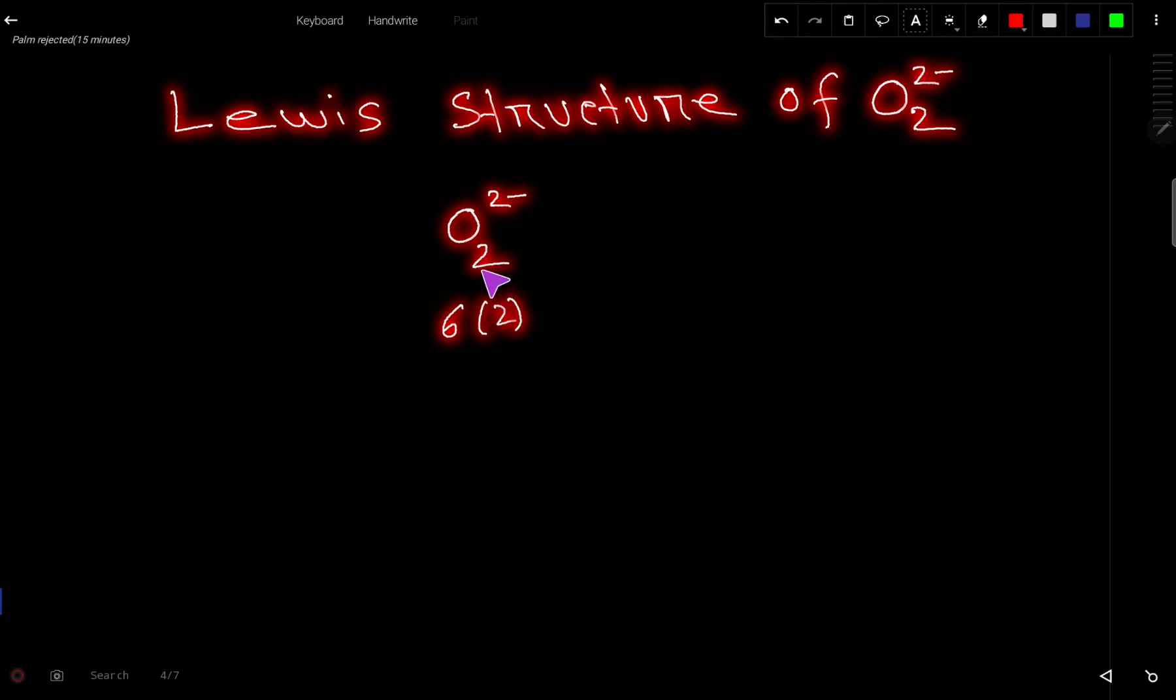But here we have 2 atoms of oxygen, so we need to multiply by 2, plus 2 for the charge. So we are getting 12 plus 2, which gives us 14 valence electrons totally. These 14 valence electrons have two tasks.